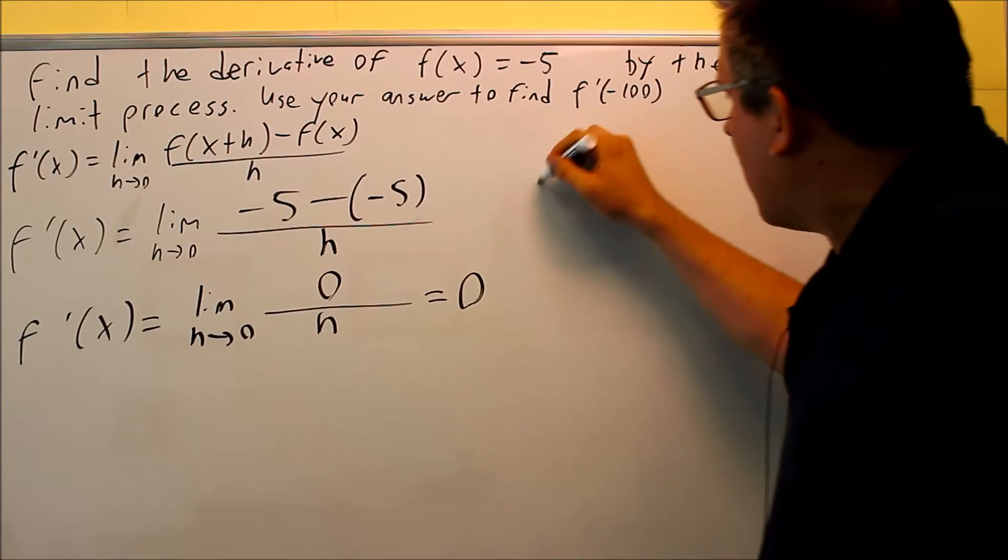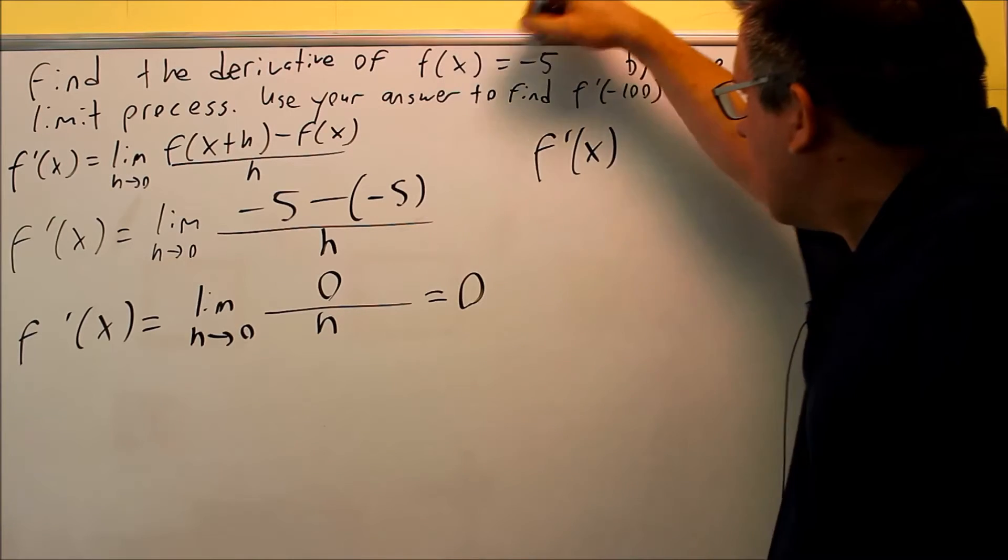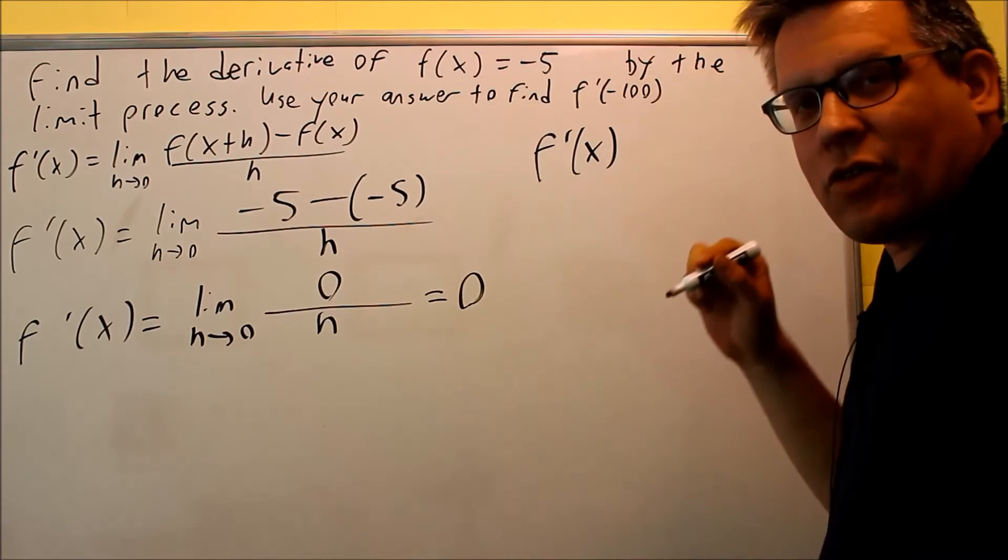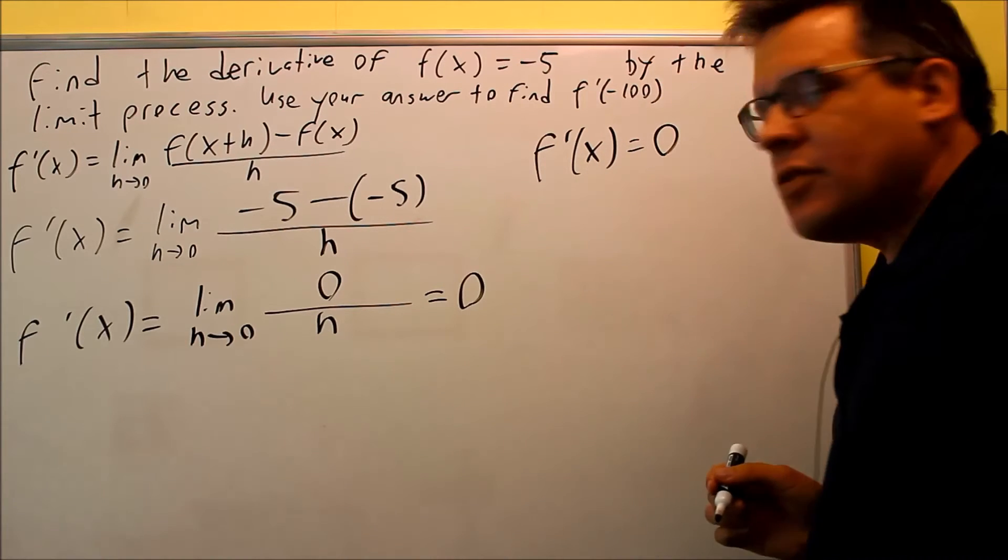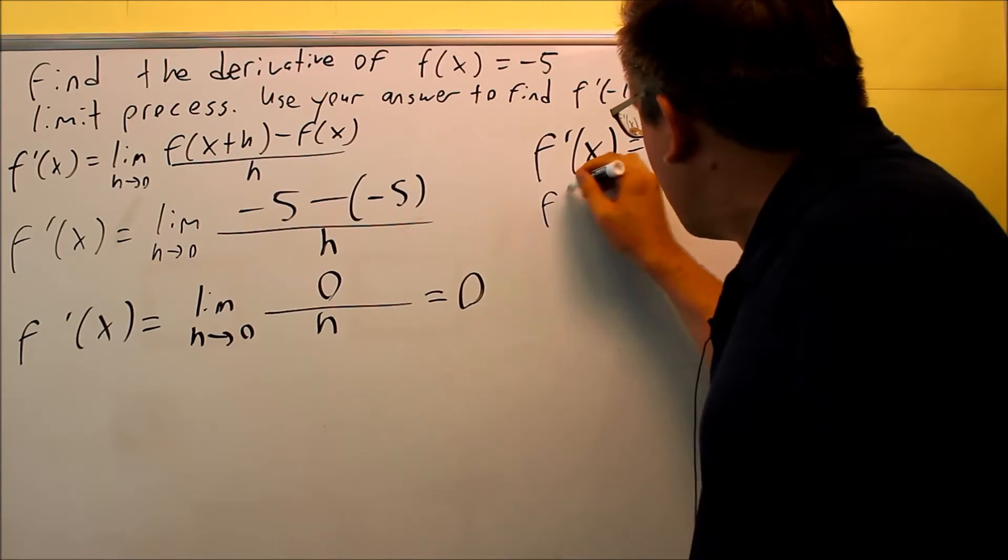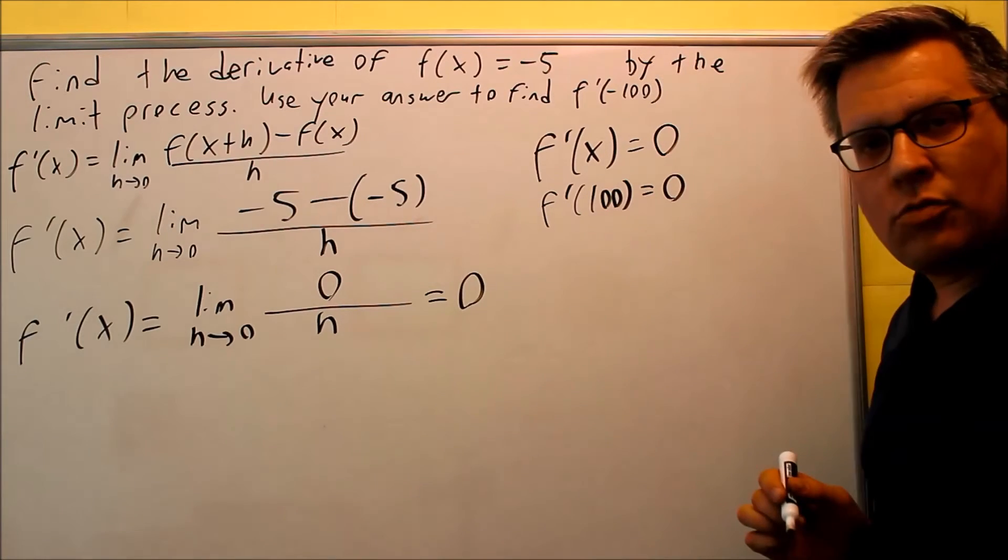So what that tells us is that the derivative, in this case, if my original function f of x is negative 5, my derivative is equal to 0. So if I try and find the derivative of 100, that's also going to be 0.